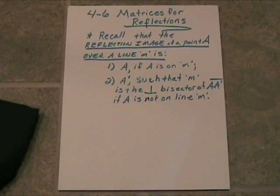The reflection image of a point A over a line M is, well, it will be the point A itself if A happens to be on the line of reflection.